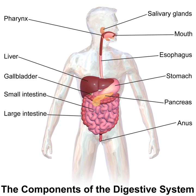In mammals, preparation for digestion begins with the cephalic phase in which saliva is produced in the mouth and digestive enzymes are produced in the stomach. Mechanical and chemical digestion begin in the mouth where food is chewed and mixed with saliva to begin enzymatic processing of starches. The stomach continues to break food down mechanically and chemically through churning and mixing with both acids and enzymes. Absorption occurs in the stomach and gastrointestinal tract, and the process finishes with defecation.